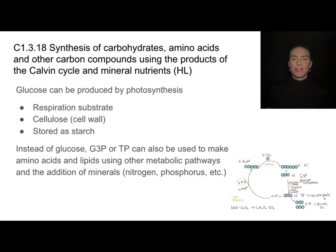So we've simplified this a little bit. Glucose can be used for lots of things. It can be sent right over to the mitochondria to be used as a respiration substrate. We can put lots of glucoses together to make cellulose for the cell wall, or it could be stored as starch granules. But guess what? Glucose isn't the only thing that can be made in the Calvin cycle. Instead of making glucose, these triose phosphates can also be used to make things like amino acids or lipids using a slightly different metabolic pathway.